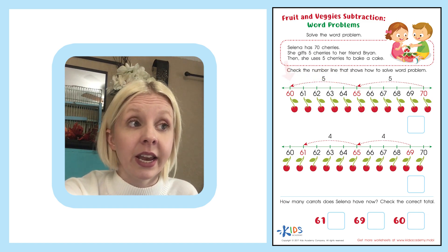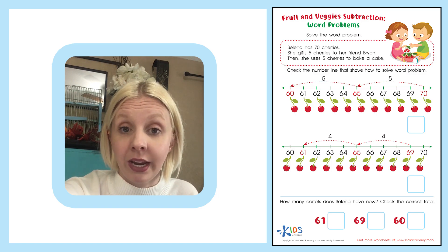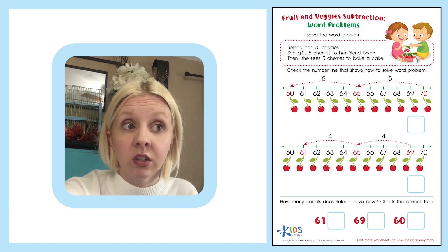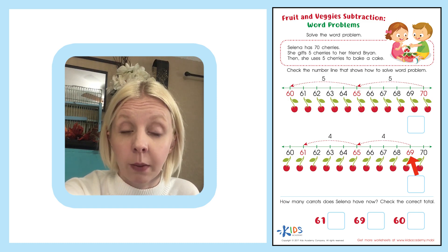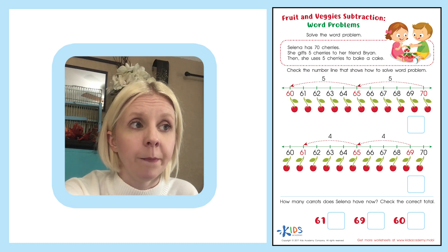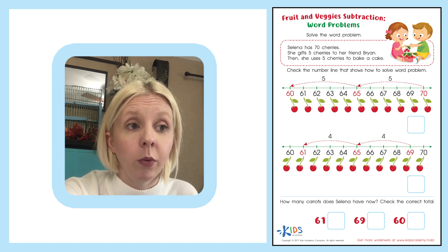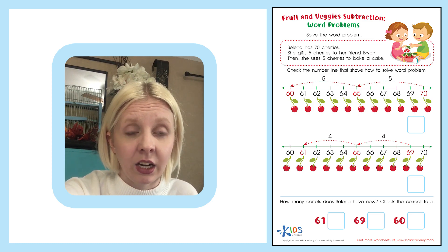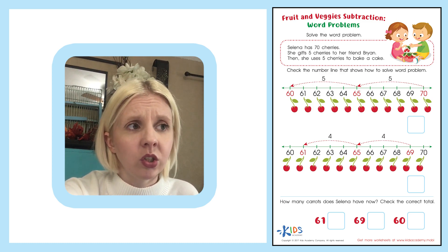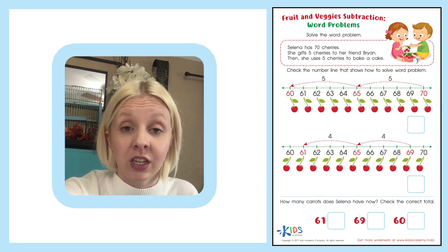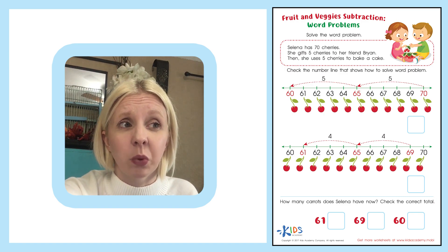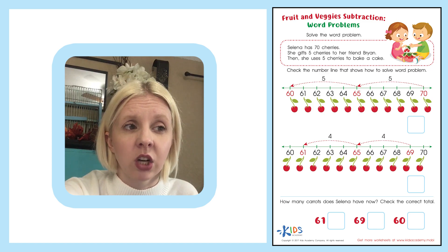This does exactly what the word problem explains, so I think this is our right answer. But let's come down here and see what this other number line says. This number line shows that we have 70, but we start on 69. We wouldn't start on 69 because Selena has 70 cherries, so I can already tell that this is not correct.